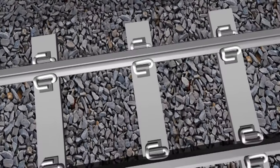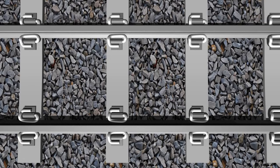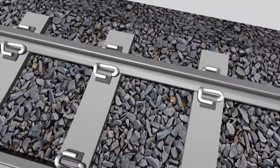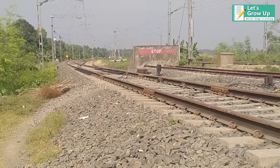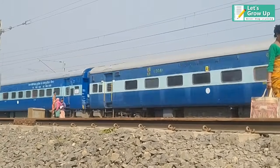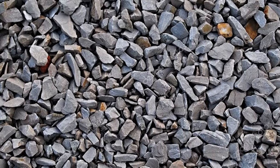Ballast is the name for the stones beneath the track. Track ballast forms the track bed upon which railroad sleepers are laid. It is used to bear the load from the railroad ties, to facilitate drainage of water, and also to keep down vegetation that might interfere with the track structure. The ballast also holds the track in place as the trains roll over it and absorbs noise. It typically consists of crushed stone.